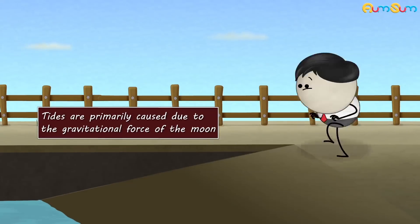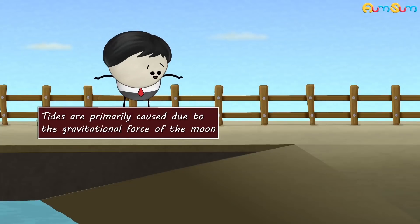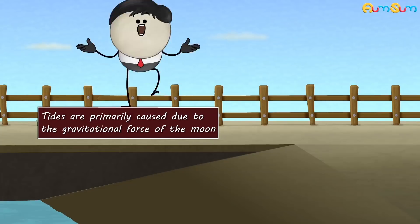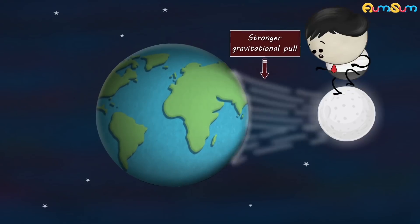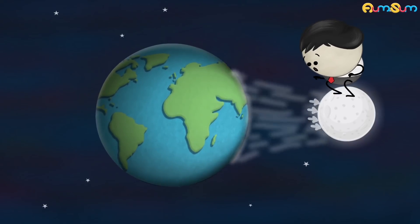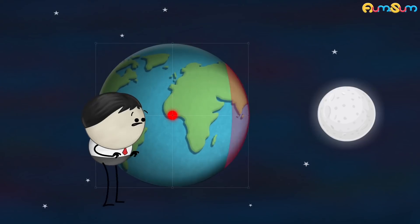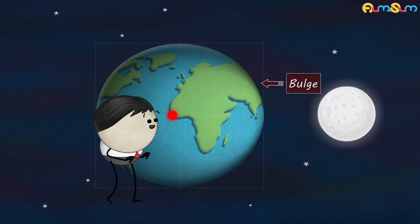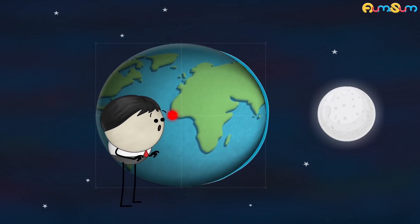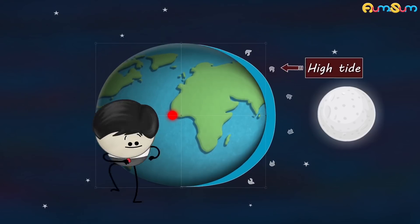Tides are primarily caused due to the gravitational force of the moon. Part of the earth facing the moon experiences a stronger gravitational pull towards the moon as compared to the earth's center. So the part facing the moon is pulled away from the center, creating a bulge and thus increasing the sea level and causing a high tide.